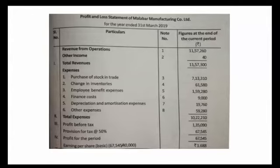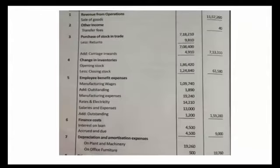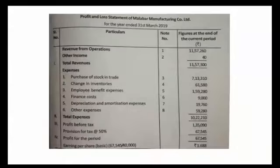Next, expenses. Purchases of stock in trade — Note No. 3. Purchases is 7,18,210, less purchase return of 9,810, giving a balance of 7,08,400. Adding carriage and burden of 4,910, the total of purchases comes to 7,13,310.